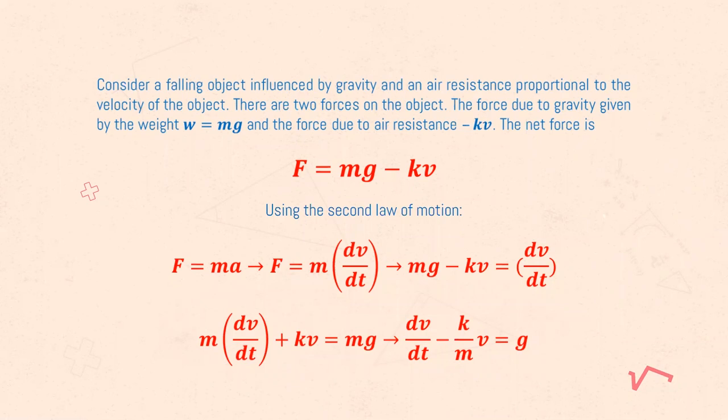Consider a falling object influenced by gravity and an air resistance proportional to the velocity of the object. There are two forces on the object: the force due to gravity given by the weight w equals mg and the force due to air resistance negative kv.